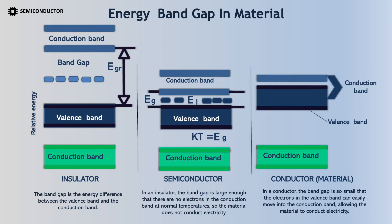Energy band gap in materials: The band gap is the energy difference between the valence band and the conduction band. In an insulator, the band gap is large enough that there are no electrons in the conduction band at normal temperatures, so the material does not conduct electricity. In a conductor, the band gap is so small that electrons in the valence band can easily move into the conduction band, allowing the material to conduct electricity.